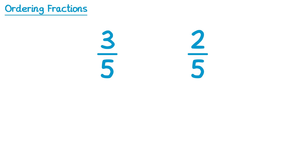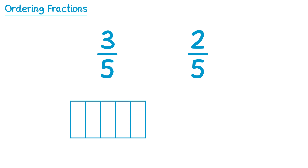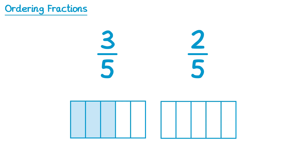If we were to draw a diagram of 3 fifths, we would take a bar, split into 5 equal sections and shade in 3 of them. For 2 fifths, we would do the same thing, but only shade in 2 of them.